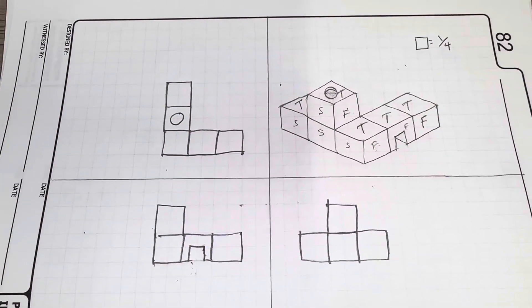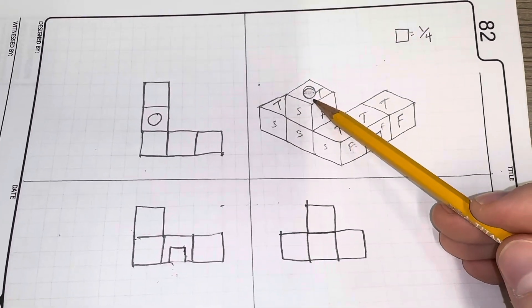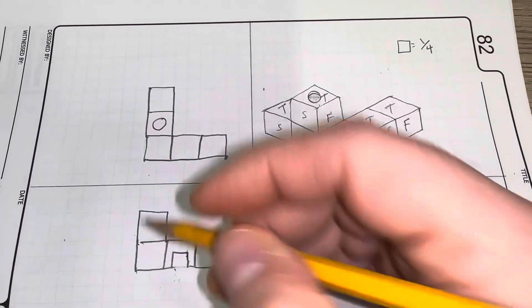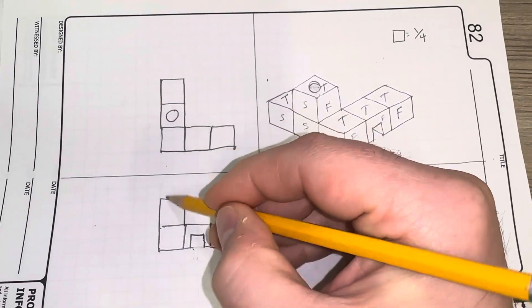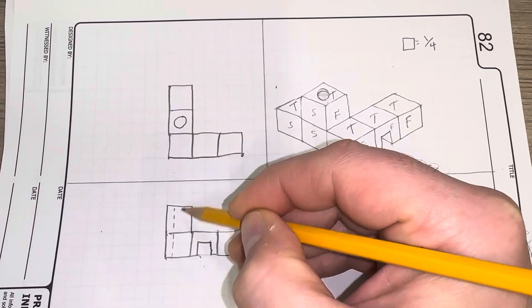Now, before we get into dimensioning, the first thing we're going to talk about is hidden lines. So this hole is on the top, one of the things we need to know is, does it go all the way through? So that's what our hidden lines are going to do. So what we're going to do is show that this hole is drilled all the way through.